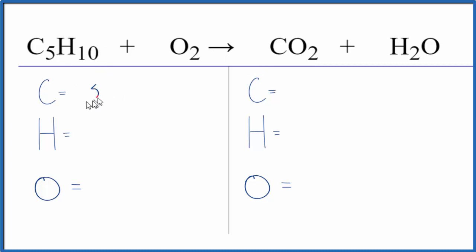On the reactant side we have five carbons, ten hydrogens, and two oxygen atoms. On the product side we have one carbon, two hydrogens, then two oxygens here plus the one oxygen in the water, so we have three total.